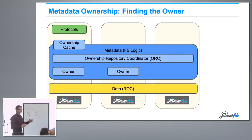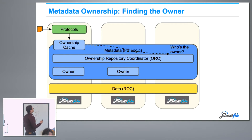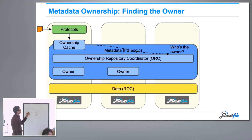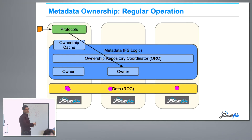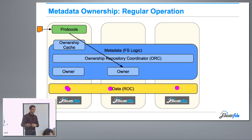Let's look at an example of an IO and see where it touches all of these different blocks. An IO comes in and we go to the ownership cache. In this example, we don't have any entry, so we go to the ORC repository. We ask who's the owner, and it tells us node B is the owner. From now on, we talk to node B for all accesses to this specific file. During regular operation, the owner puts journal entries all across the cluster as part of its changes, and eventually performs checkpointing to delete them.